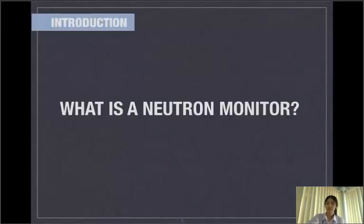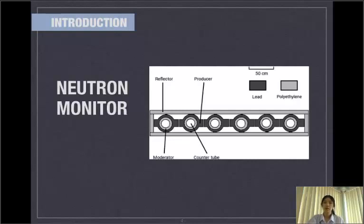What is a neutron monitor? A neutron monitor or NM is a ground-based detector for measuring the number of particles that come to Earth.